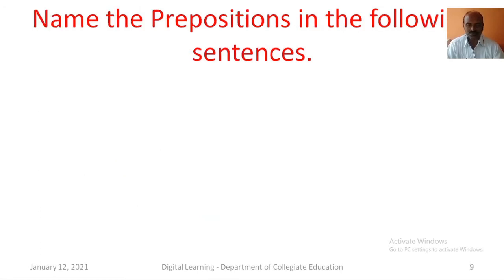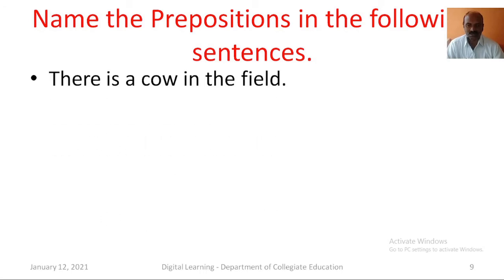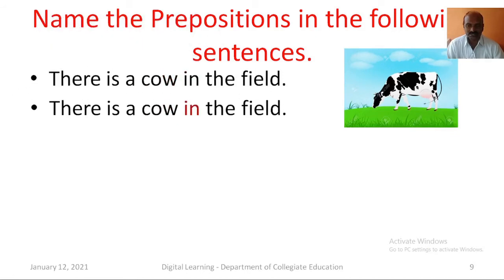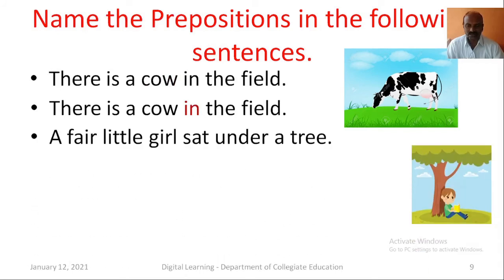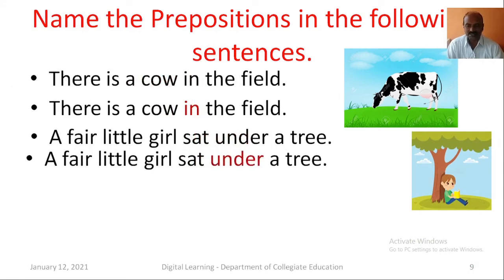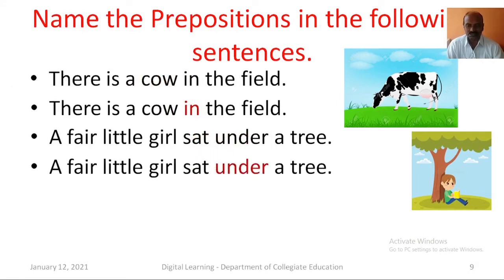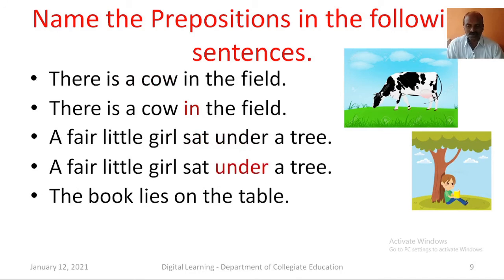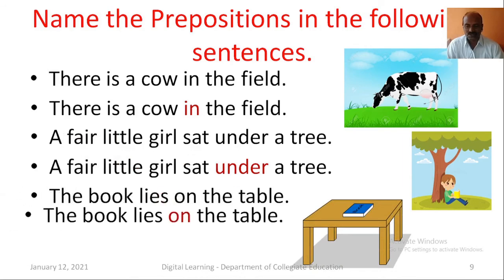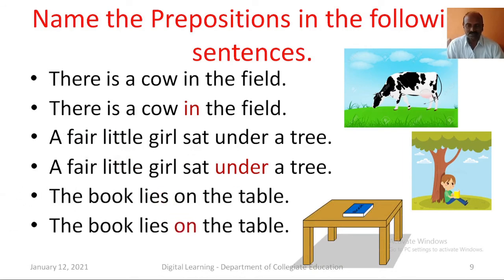Name the prepositions in the following sentences. There is a cow in the field — in this sentence, in is the preposition. A fair little girl sat under a tree — in this sentence, under is the preposition. The book lies on the table — here, on is the preposition.